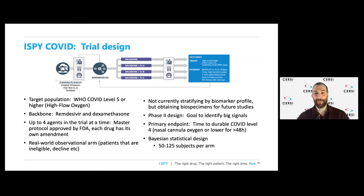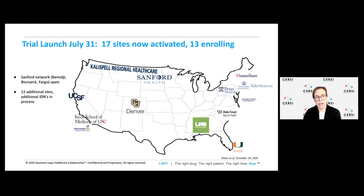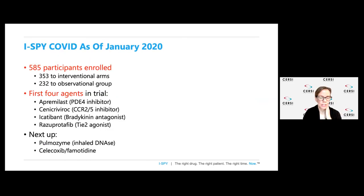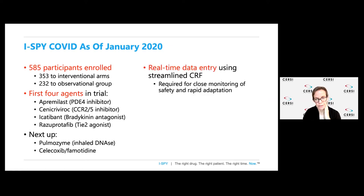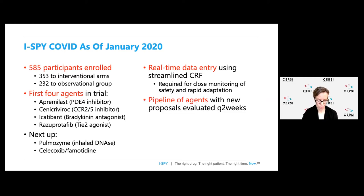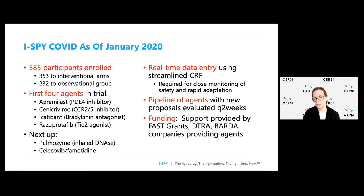We are using a Bayesian statistical design with 50 to 125 subjects per arm. The trial was launched on July 31st, and we now have 17 sites activated and 13 enrolling, with an additional 12 sites and integrated delivery networks currently in process. As of today, we have nearly 600 patients enrolled, including 353 to the interventional arms. We have the first four agents in the trial, with two agents on deck next up. We've developed a system of real-time data entry using a streamlined case report form, a pipeline of agents with new proposals being evaluated every two weeks. Funding has been provided by FastGrants, DITRA, BARDA, and the companies providing the agents.